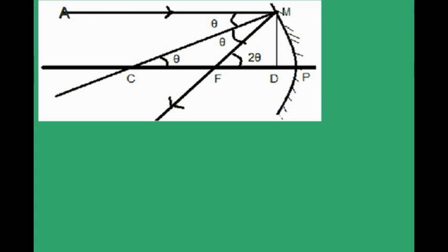Let's derive the focal length. Consider an incident ray AM reflecting through focus F. From triangle MCD, tan θ = MD/CD, and from triangle FMD, tan 2θ = MD/FD. For a very small θ, tan θ ≈ θ, so θ = MD/CD and 2θ = MD/FD.